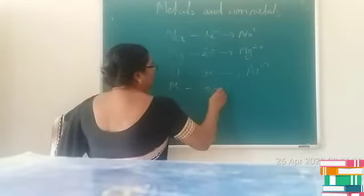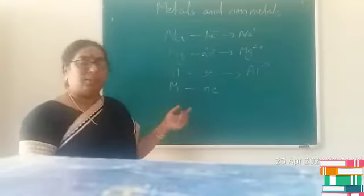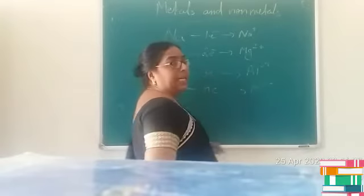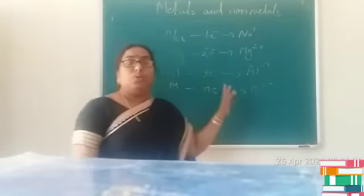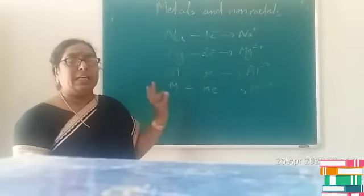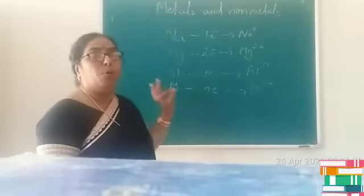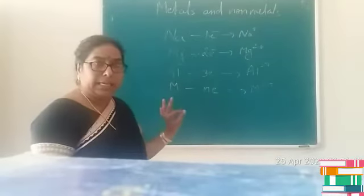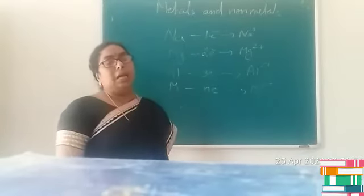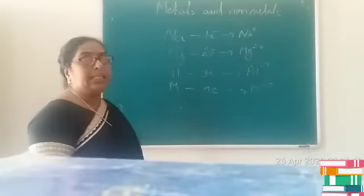So we can say that if it is a metal, it always shows a tendency to lose n electrons. This n can be generally 1, 2 or 3 and produces M^n+. n+ represents the number of electrons lost. So children, metals can be defined as those group of elements which generally show a tendency to lose electrons and form electropositive ions.